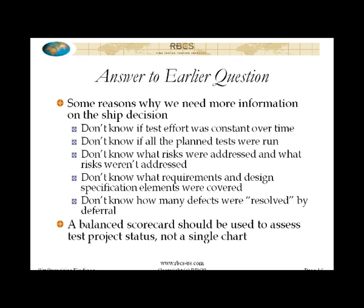You don't know what risks were addressed and what risks weren't. Based on a simple open-closed chart — or found-fixed chart, or reported-resolved chart, whatever you call that convergence curve — you do not know what risks were addressed and what risks were not, so you don't know what your residual level of risk is. Similarly, you don't know what requirements and design specification elements were covered, so you don't know what level of confidence you should have in the system. Also, in a lot of cases, 'resolved' includes not only bugs that were fixed and confirmed fixed, but also deferrals. If the deferral rate has been extremely high, then really all we've done is shunt the problem into the field. This is why we look for what I'm referring to here as a balanced testing scorecard.